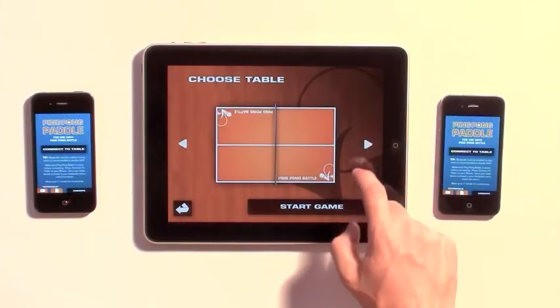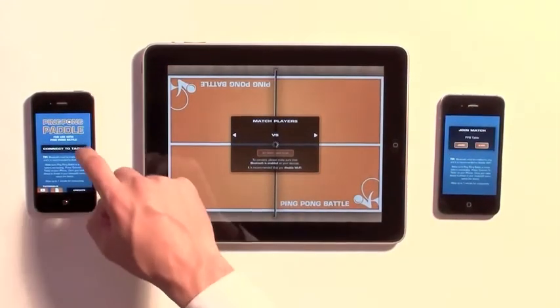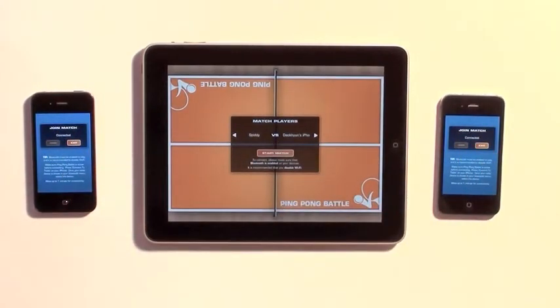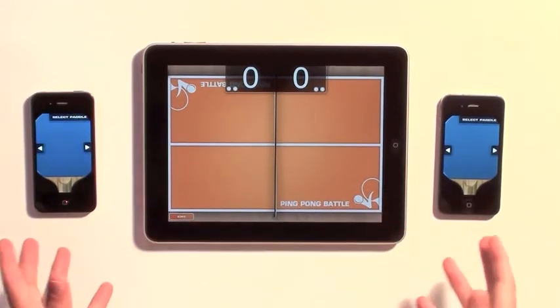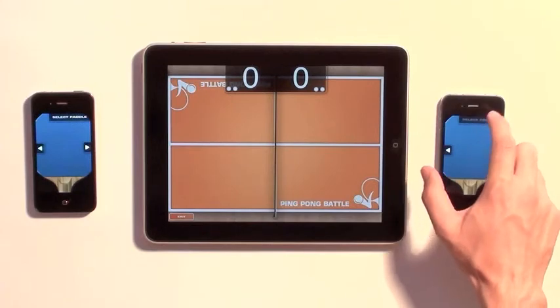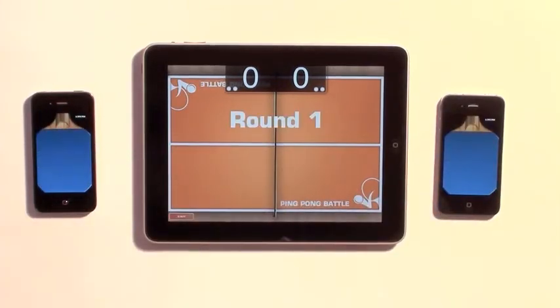We'll go ahead and select a table. Once you've selected the table, we can go here to the other devices, whether it's your iPhone, iPod Touch, or an iPhone 4 now. And once you've done that, you can see how quickly it connected. I select my paddles. The game will automatically begin now. That is a new feature.